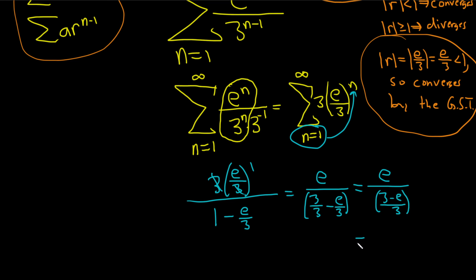Now we're actually dividing, so it's e times the reciprocal, which is 3 over 3 minus e. This is just going to be 3e over 3 minus e, and that should be the sum of the infinite series. Good times. I hope this video has been helpful to you. Good luck.